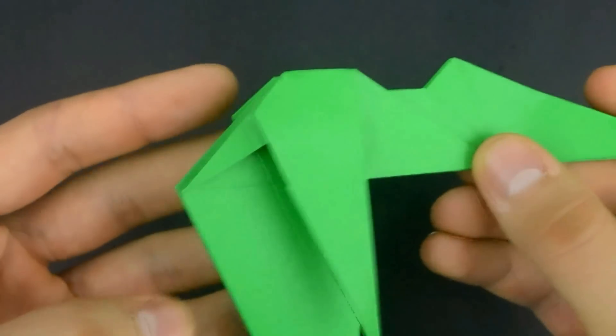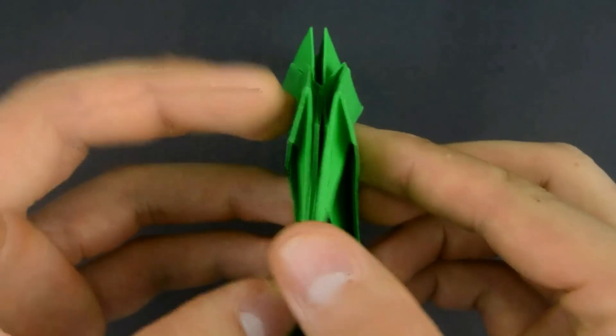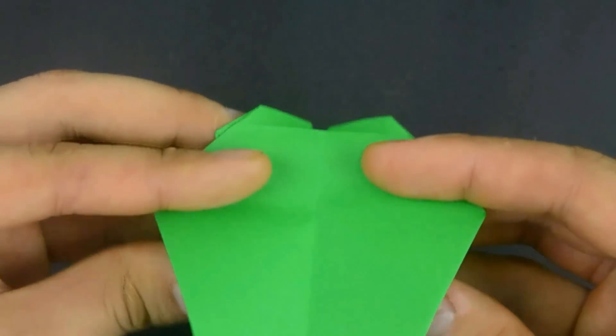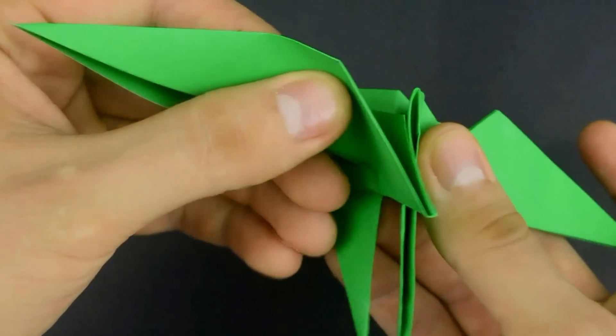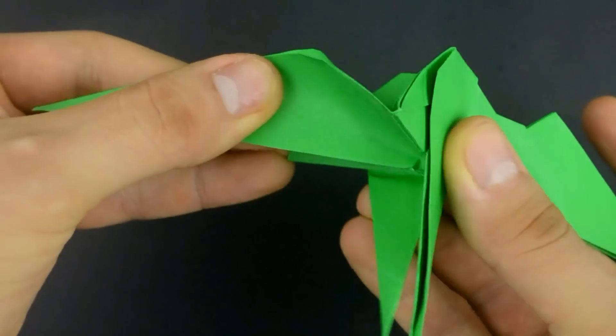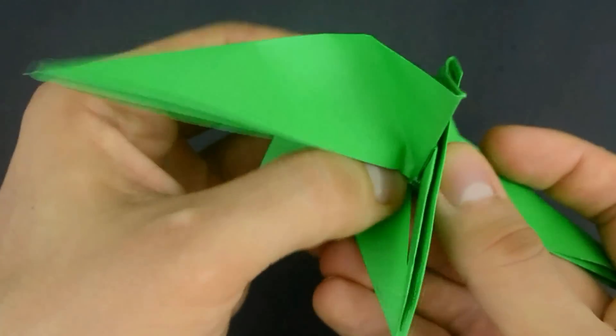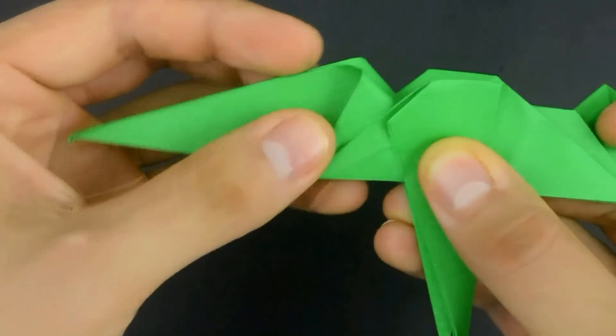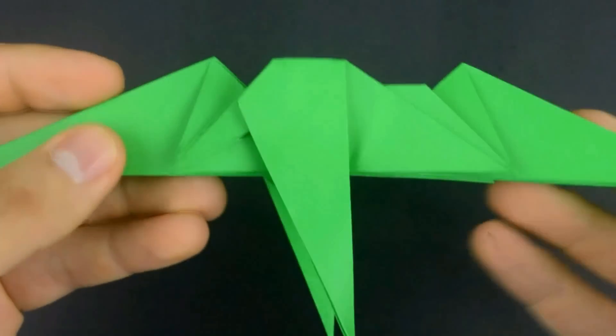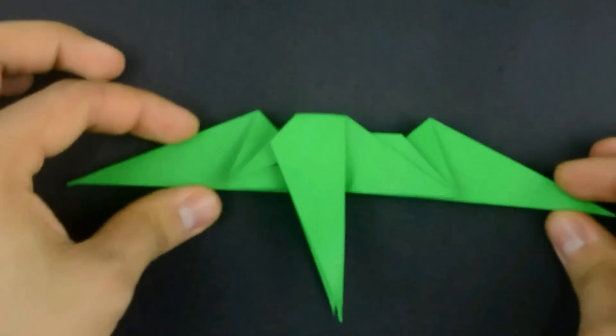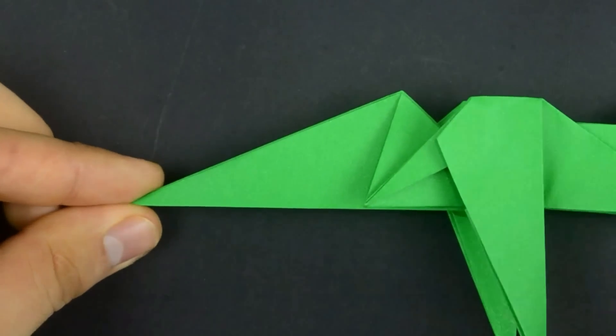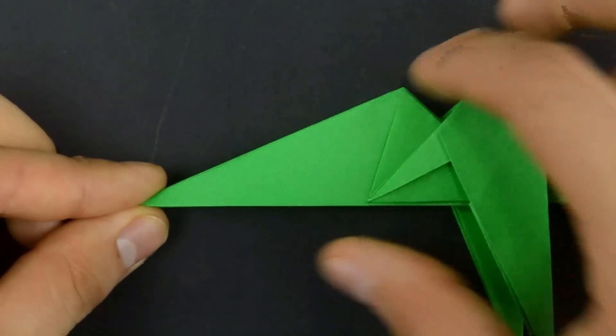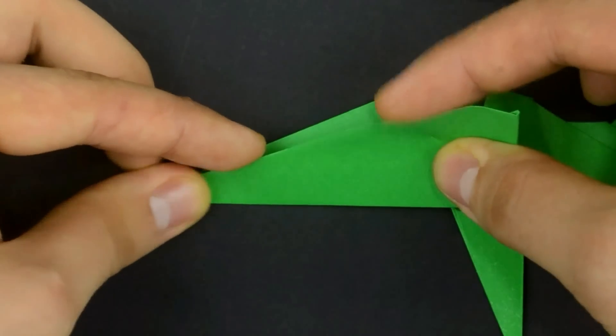Repeat the same on the other. For the next step we'll make the tail with the left flap. Let's fold the diagonal edge to the horizontal. Just like that.